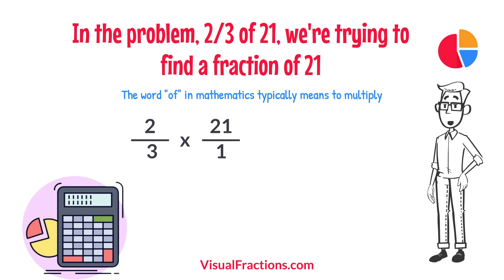Now, we proceed to multiply across. First, multiply the numerators, 2 times 21 equals 42.